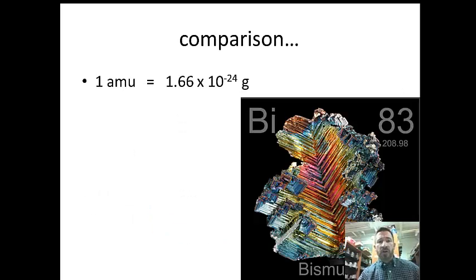AMUs are very small. The mass of one AMU is 1.66 times 10 to the minus 24 grams. You will not need to use this number or memorize it. For example, the molar mass of bismuth would be 208.98, but the average atomic mass was 208.98 AMUs.